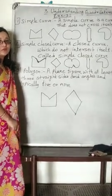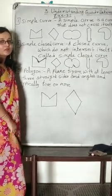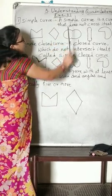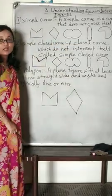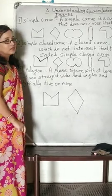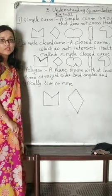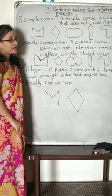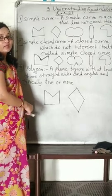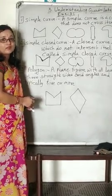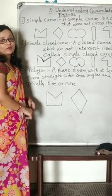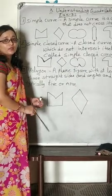Good morning children. We are going to start the new chapter, that is the understanding quadrilateral. Now what is the quadrilateral? Quadrilateral figures are joined with four straight line segments. Those figures we call the quadrilateral. We will learn so many things about the quadrilateral and we have the next exercise about it.